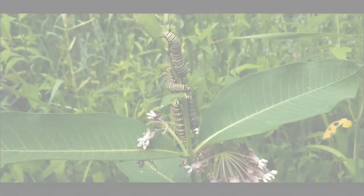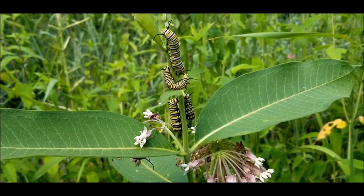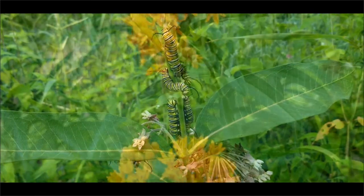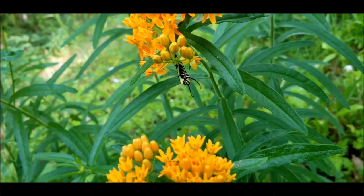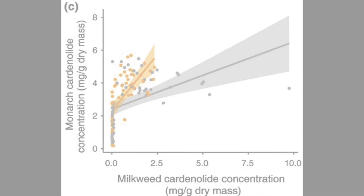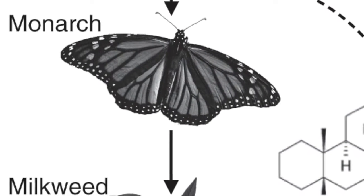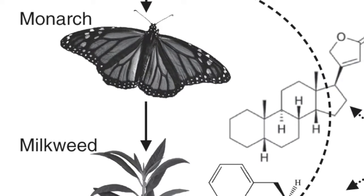With monarch larvae continuing to decimate milkweed populations across North America, and previous morphological adaptations being outcheated by the monarch, mutations increasing the concentration of cardenolides became a highly beneficial defensive trait. With natural selection strongly favoring cardenolide-rich milkweed specimens, monarch populations found themselves at an extreme disadvantage. However, the gradual genetic alterations in the monarch's sodium pump helped keep the evolutionary arms race running. Three particular mutations altered the monarch's sodium pump, which prevented cardenolides from binding to this crucial cellular component.